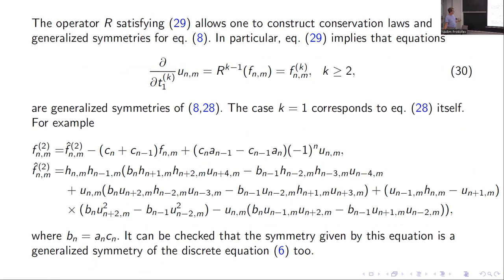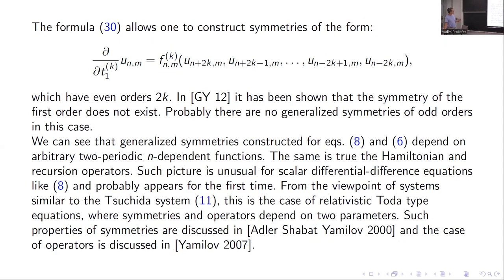By using these recursion operators, we can construct the hierarchy of generalized symmetries in the n direction. The next symmetry looks like this. Here the second term contains a second-order symmetry when the set of this function is equal to a constant, and this corresponds to a point symmetry.